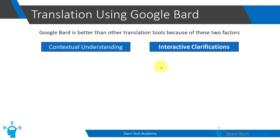In Google Translate, you will be translating word to word. There will be no input of context, and neither will Google Translate try to understand the context from the given text.